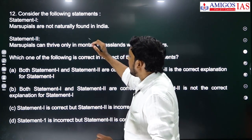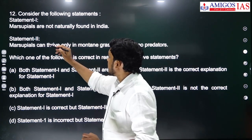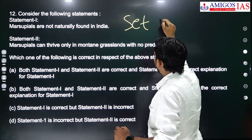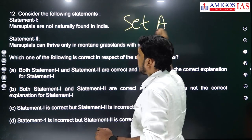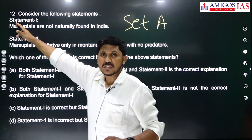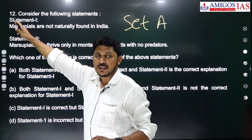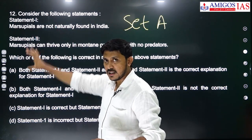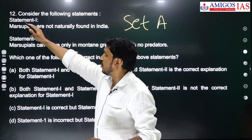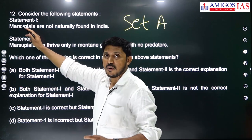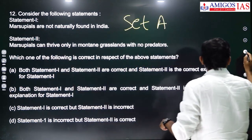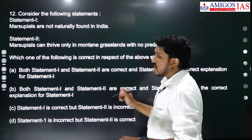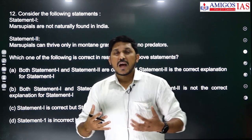The second question is regarding marsupials. This is from Set A, and I have maintained the question numbers from the current set — so numbers correspond to Set A throughout this segment.